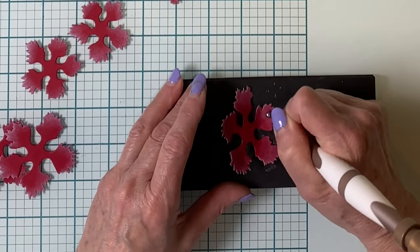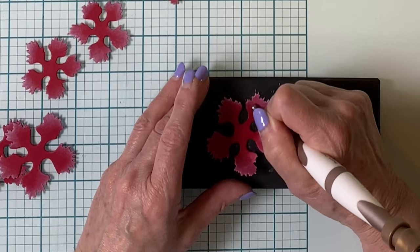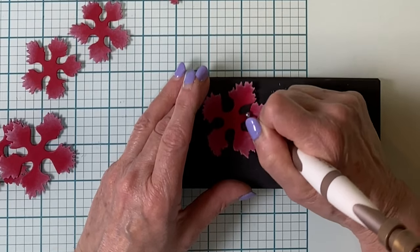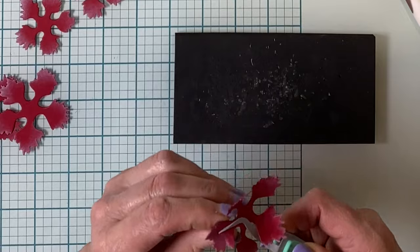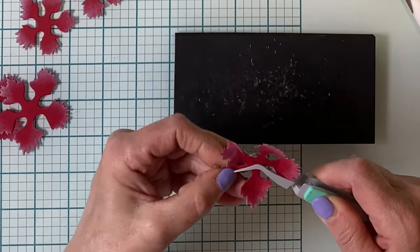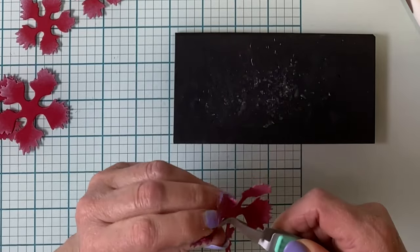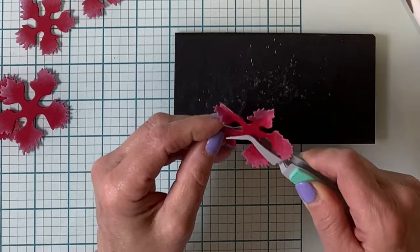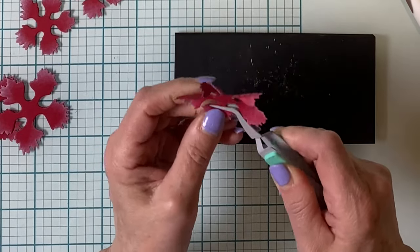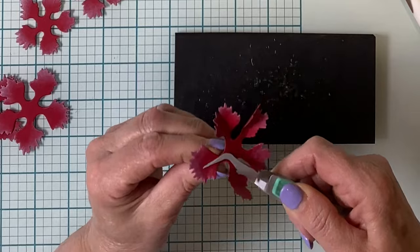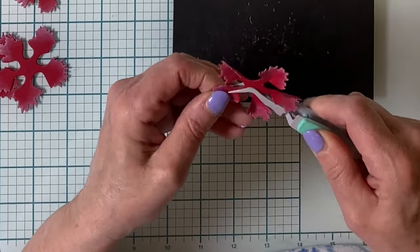With the flower right side up on the foam shaping mat, the ball tool is used to make little circular motions on each of the petals. For this next task, I'm using my reverse tweezers rather than the regular ones because I find it has better reach. The nose of the tweezers is placed at the base of each of the petals and then it is simply pinched upwards.